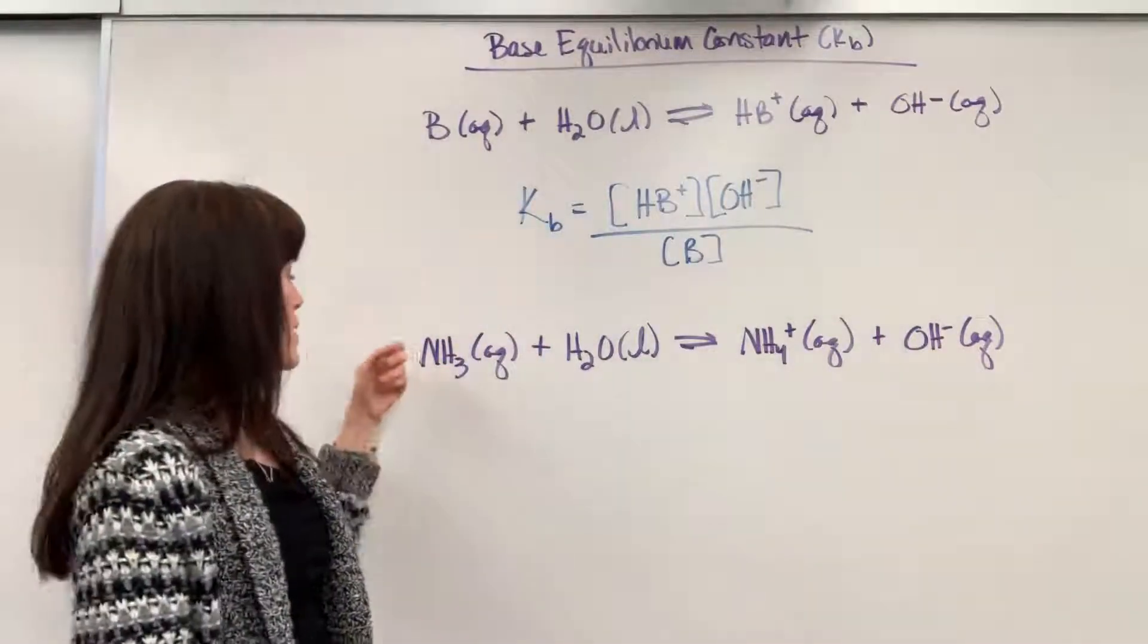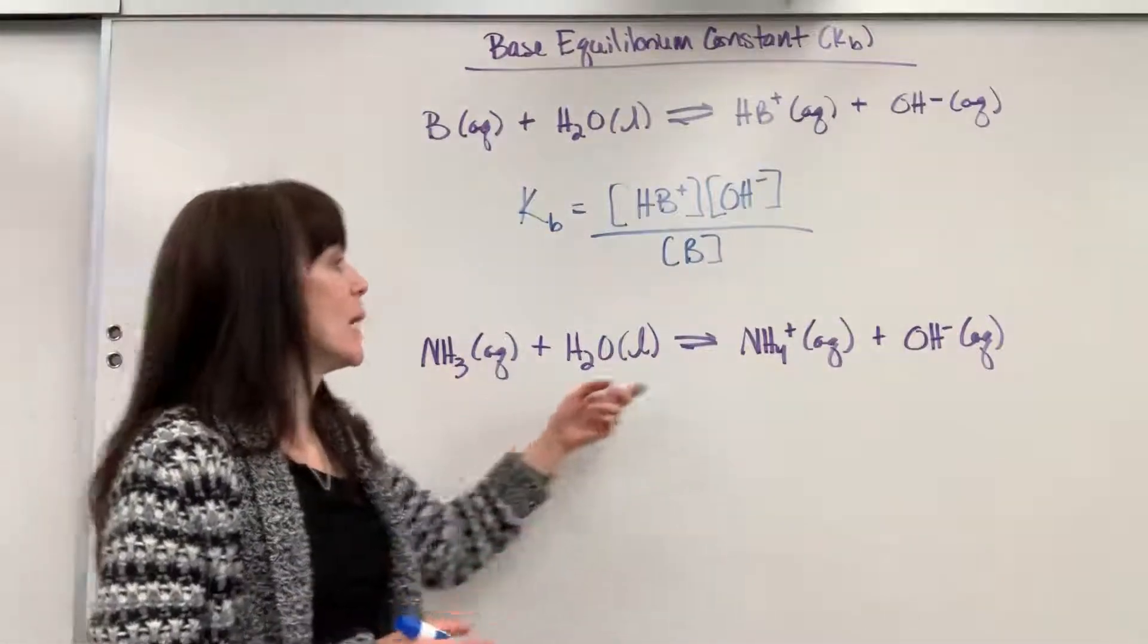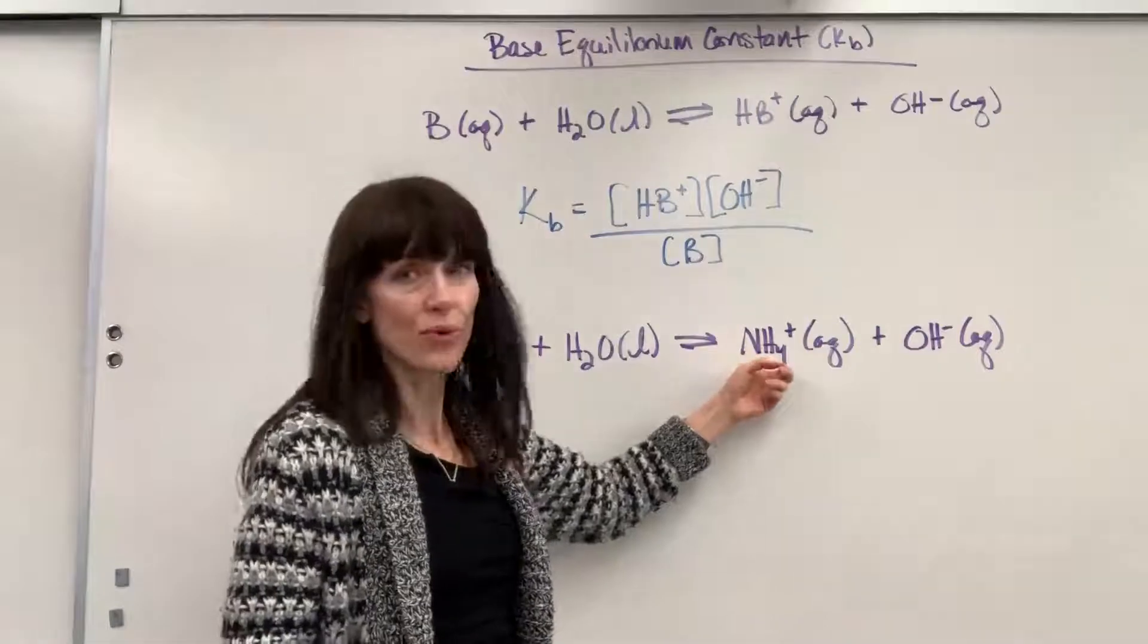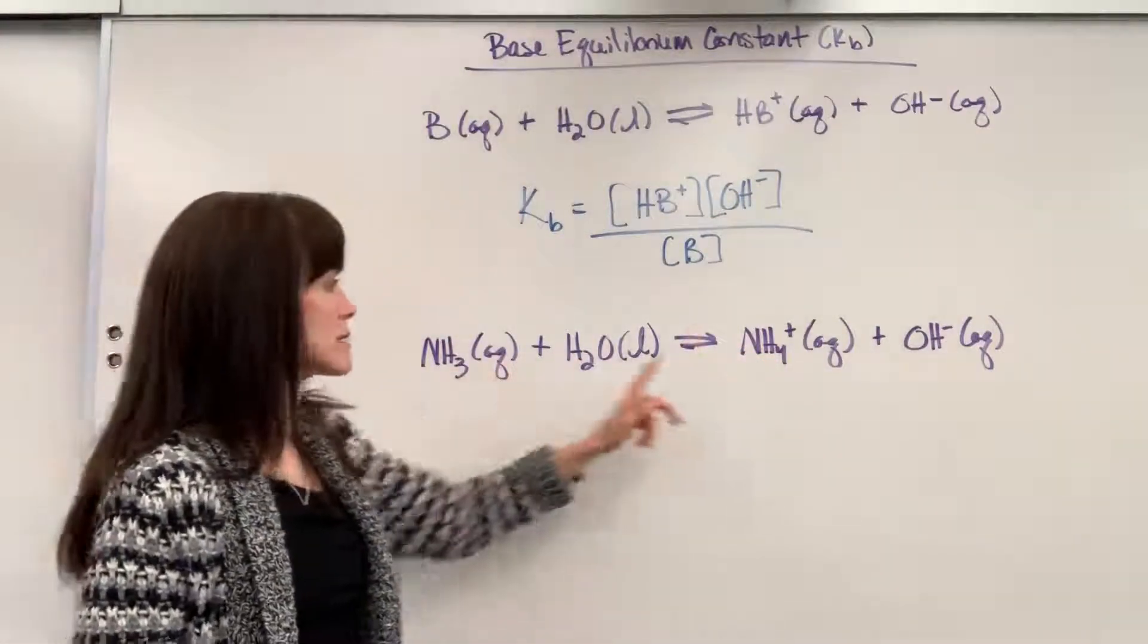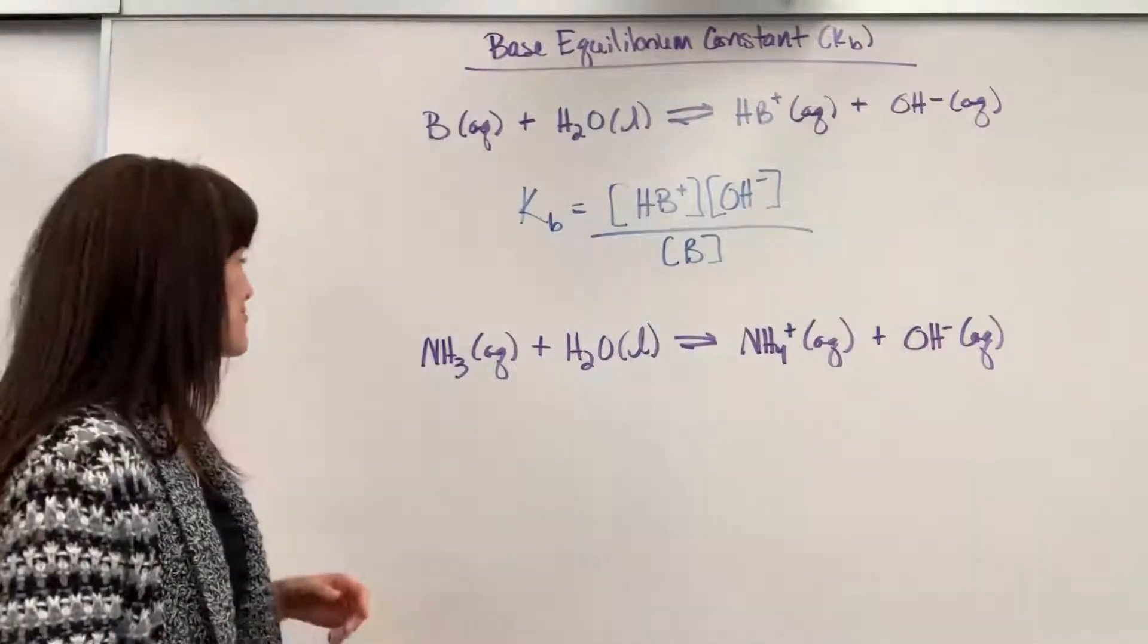How I keep these two straight: ammonia ends with an A, has NH3. Ammonium ends with an M, has NH4. So A comes before M, 3 comes before 4. That's how I remember ammonia versus ammonium, the difference between the two.